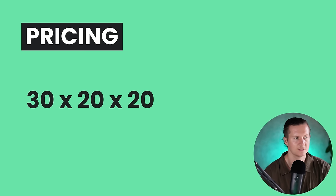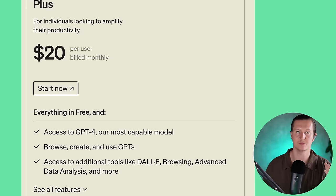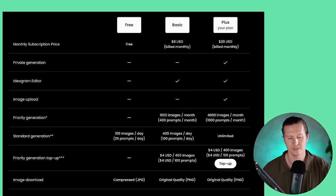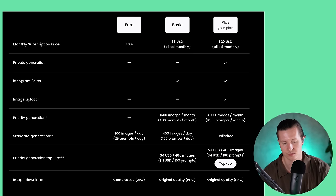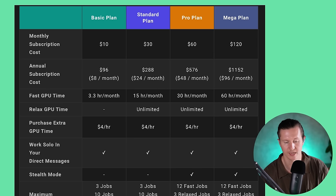Now we'll talk a little bit about pricing. All of these plans offer quite comparable options for their unlimited versions. The unlimited monthly pricing is $20 for Ideogram and DALL-E 3, and $30 for Midjourney. However, DALL-E 3 comes with ChatGPT Plus, so you get both ChatGPT Plus and DALL-E 3, which is a pretty good deal. For Ideogram and Midjourney's standard plan, you get an unlimited amount of relaxed generations, meaning you can create as many images as you want but they are slightly slower.